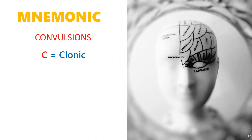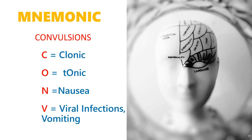Let's look at a mnemonic that can help us remember the signs and symptoms of an epileptic fit. Quite appropriately, we will be using the mnemonic CONVULSIONS. C equals clonic, O equals tonic (the second letter in the word tonic), N equals nausea, V equals viral infections and vomiting.